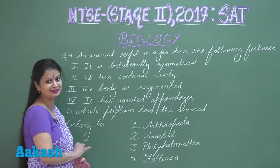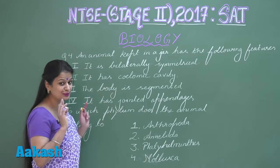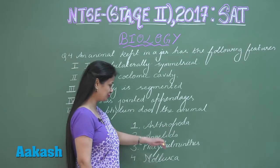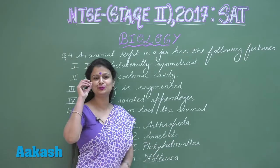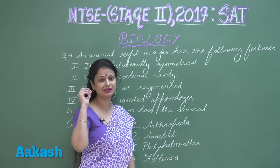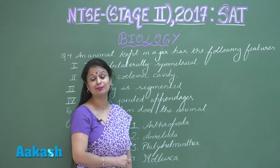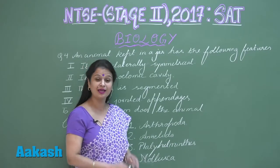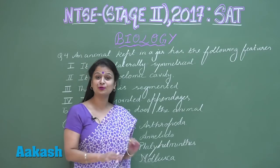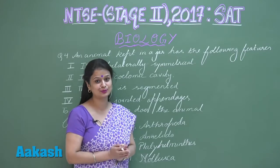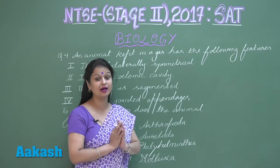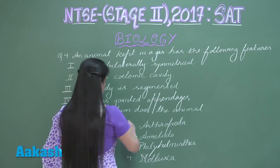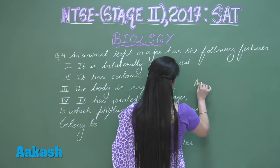Coming to the last feature — jointed appendages. Now we have only two options left: Arthropoda and Annelida. And as you know, jointed appendages are characteristic of Arthropoda. So all four features are associated with Arthropoda, and our right answer is option number one.